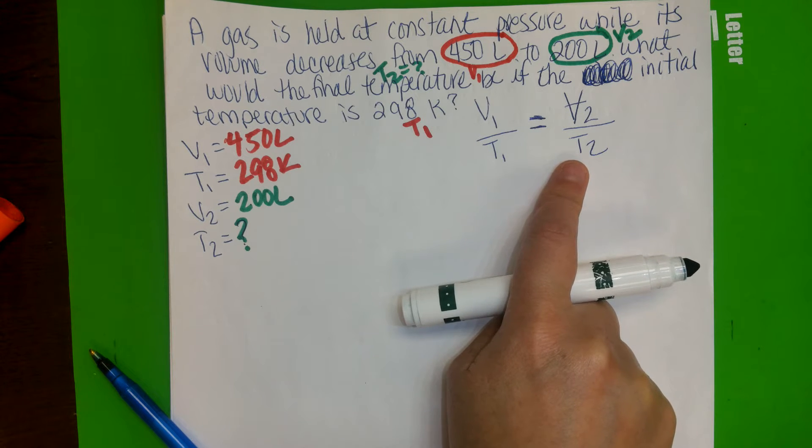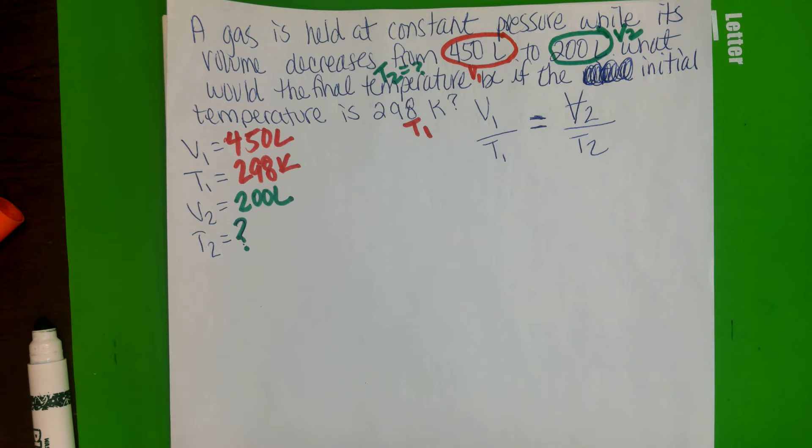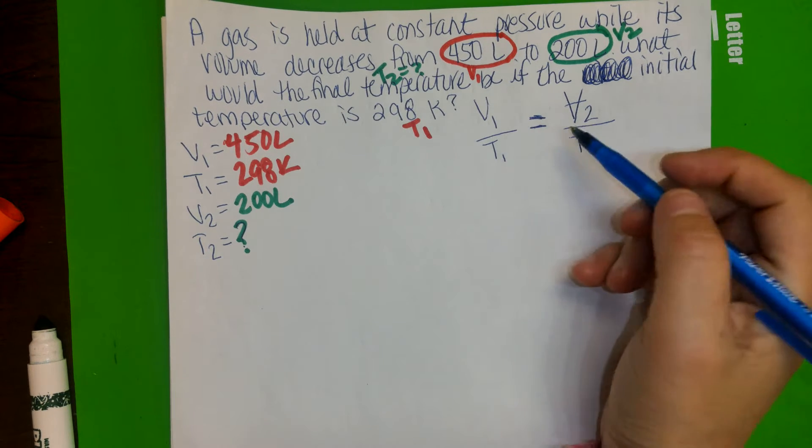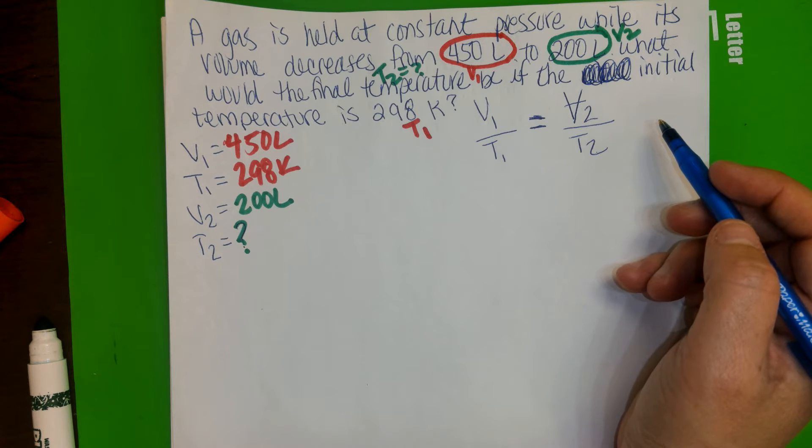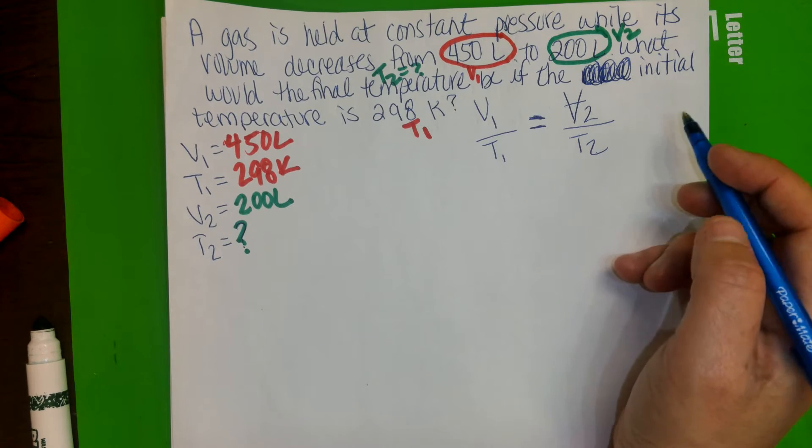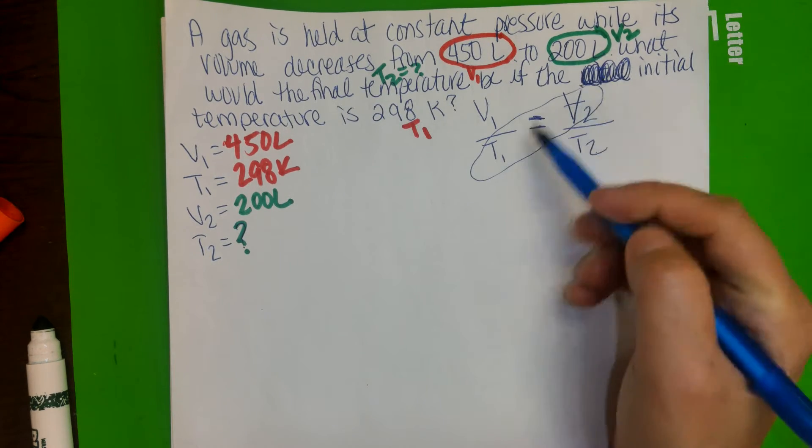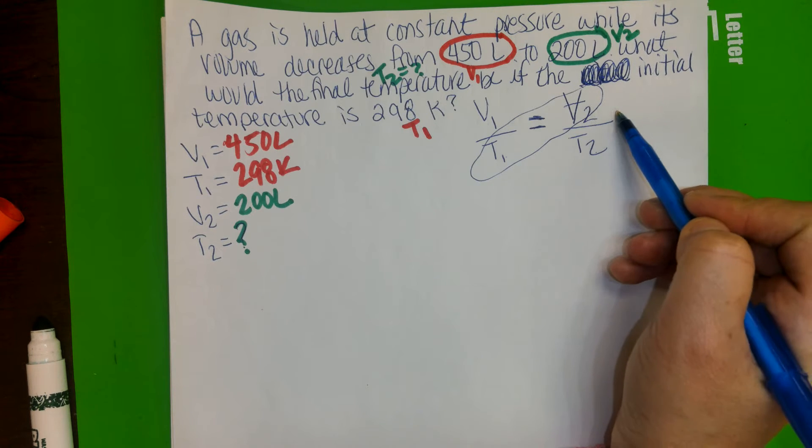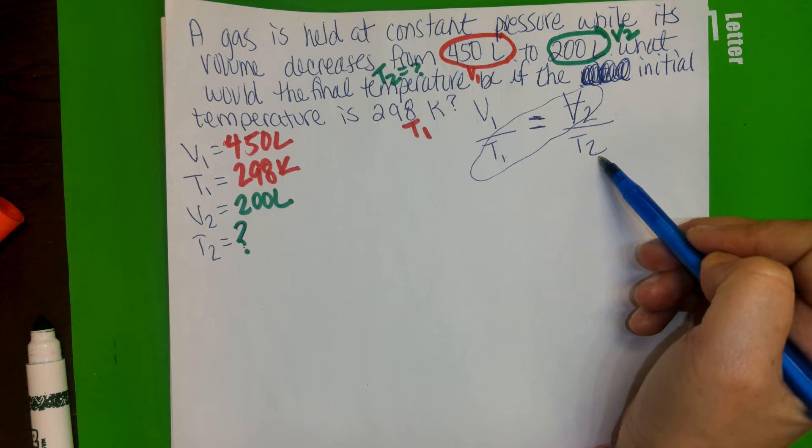This is more like cross-multiplying. We're trying to solve for T2. Just keep in mind that basically we're going to be cross-multiplying. In other words, this T1 should go to this V2. This is where we're solving for this one. Let's go ahead and get started.